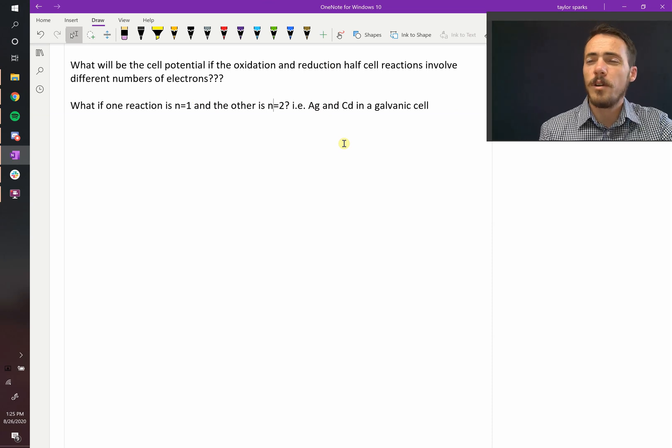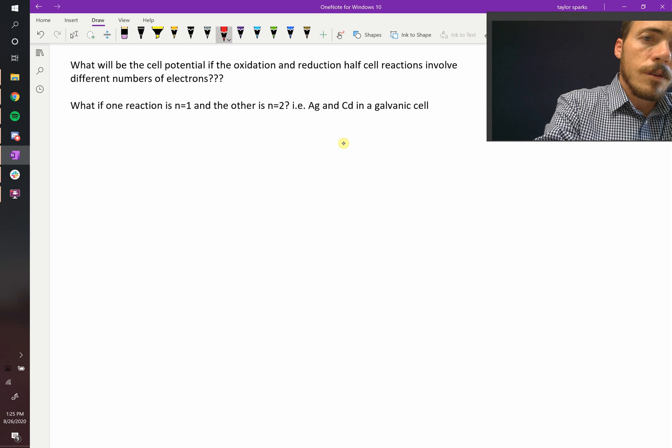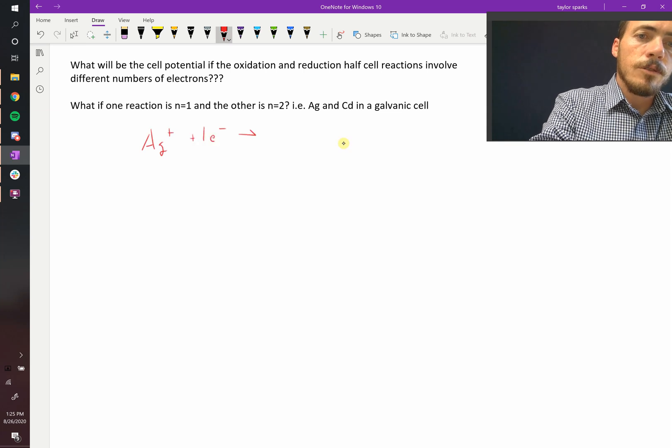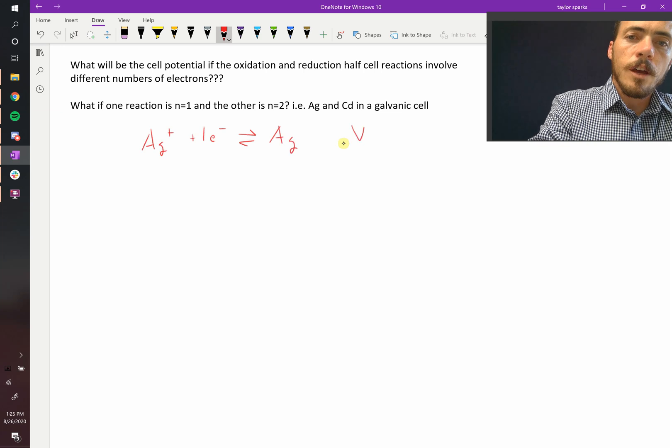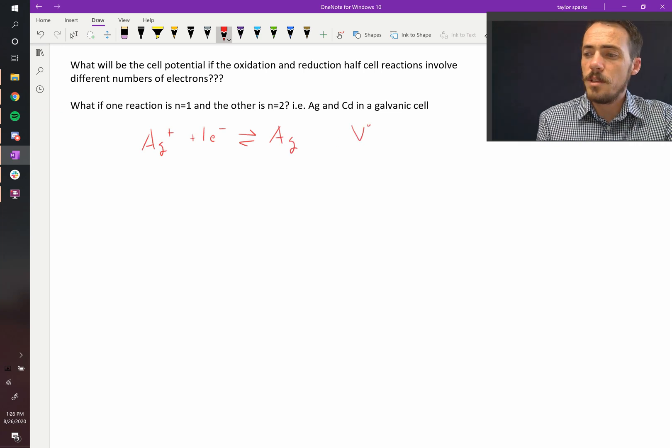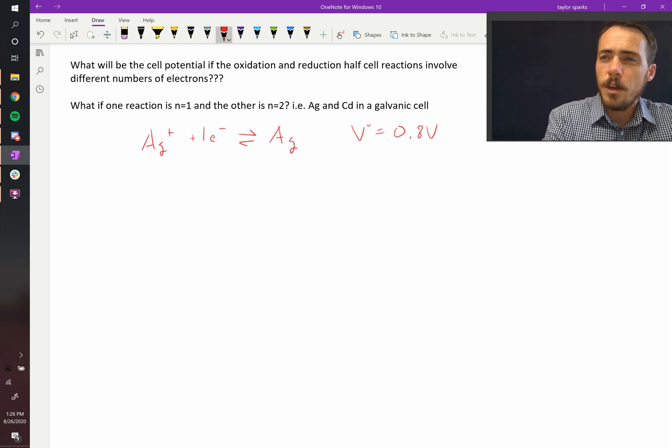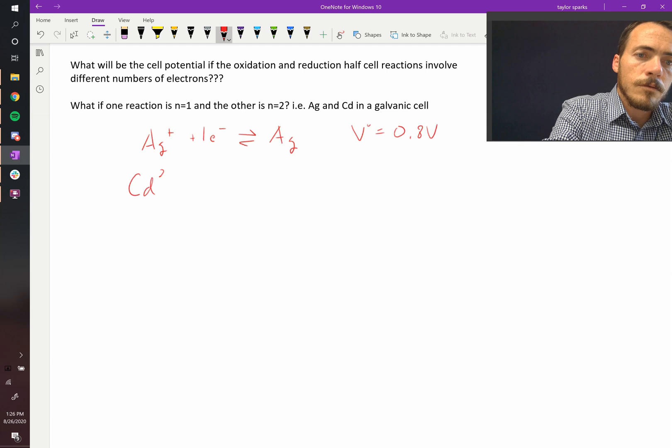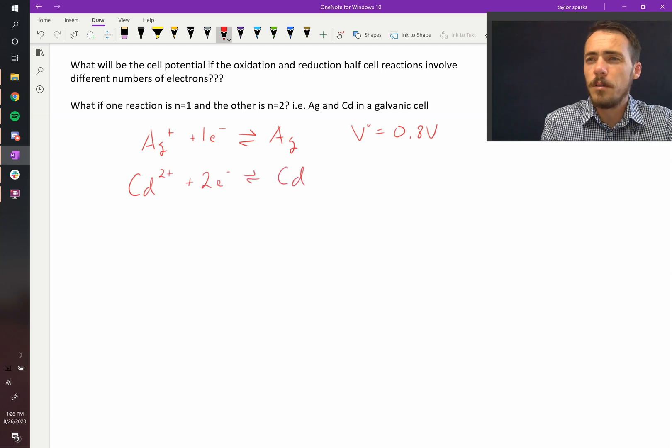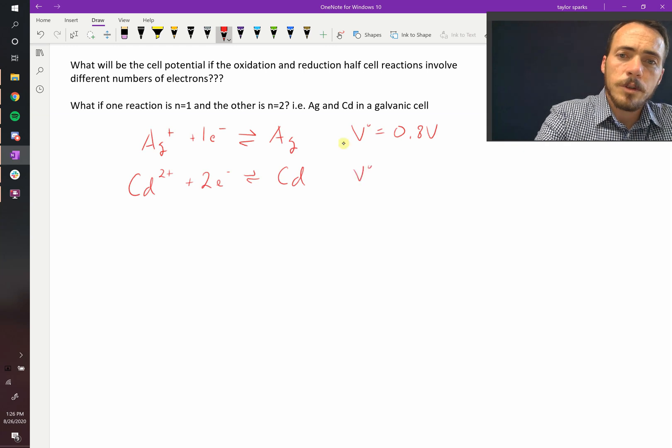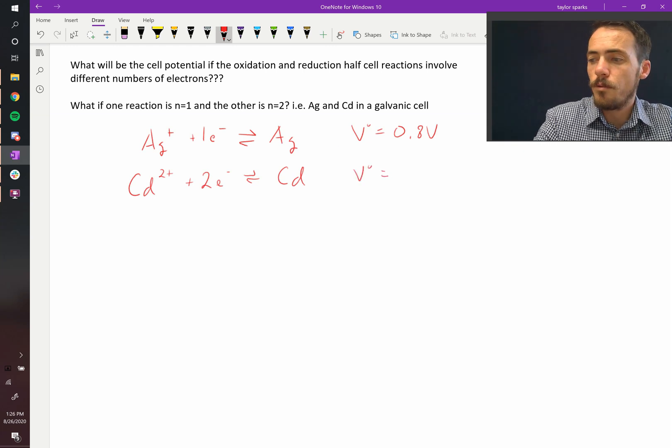We still need to figure out which one gets reduced and which one gets oxidized. So let's start by writing down the standard reduction potentials for both of these half-cells. Ag+ will pick up one electron to form Ag, and the standard reduction potential for this reaction is 0.8 volts. Meanwhile, cadmium, Cd2+, is going to pick up two electrons and form cadmium metal, and the standard reduction potential for this reaction is equal to -0.403 volts.